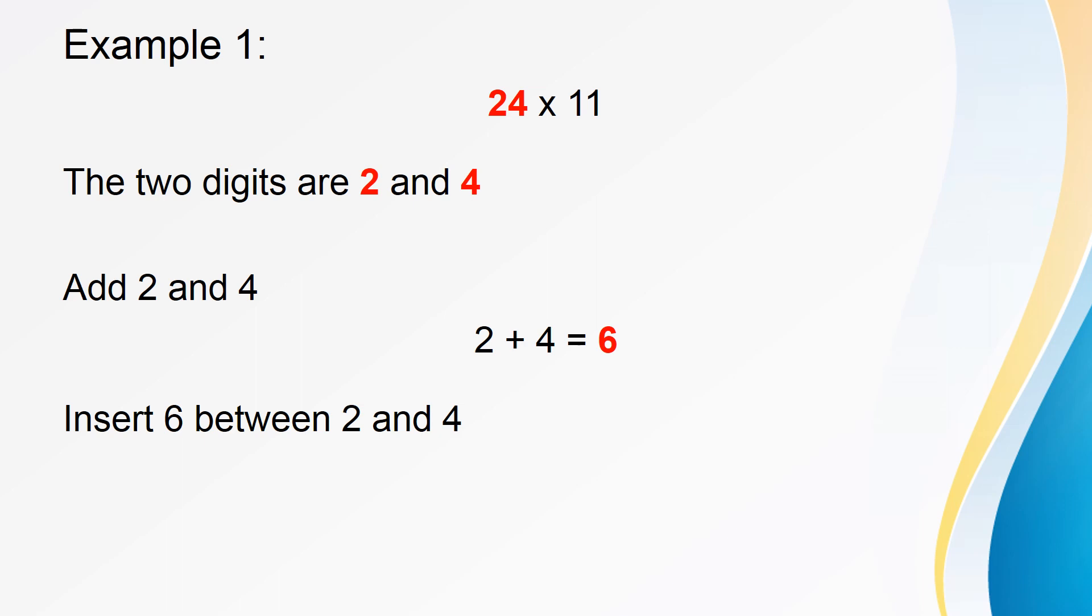Let us take an example for better understanding. Now, suppose the number is 24 and we want to multiply 24 by 11. The 2 digits of this number are 2 and 4. So, adding these digits gives us the sum as 6. Now, insert 6 between 2 and 4 to get the answer as 264. Isn't that simple?